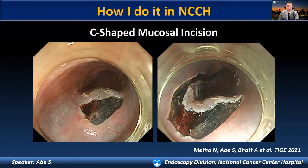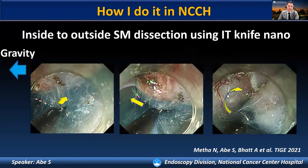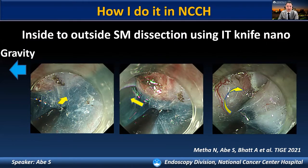In order to overcome this technical difficulty, we perform a C-shaped mucosal incision to maintain tissue traction towards the anti-gravity-dependent side. Also, when we perform submucosal dissection of the left side, we can safely dissect the submucosal by manipulating the IT knife nano from inside to outside.